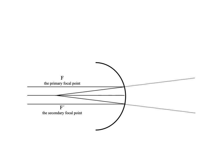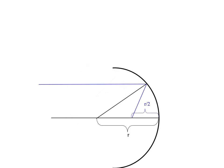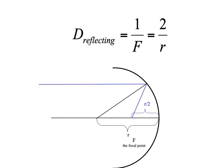Concave mirrors are plus mirrors with their focal point to the left. If you stand at the center of curvature R of a mirrored sphere, all light bounces back to you at R. Moving the object to infinity, the rays converge at R/2 — that is the focal point. The dioptric power is 2/R.